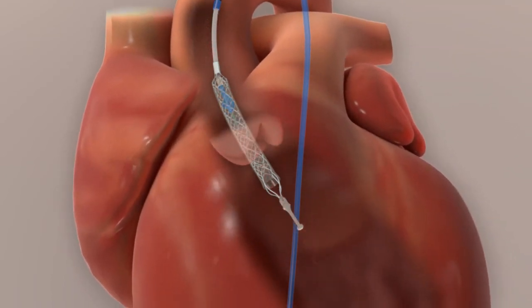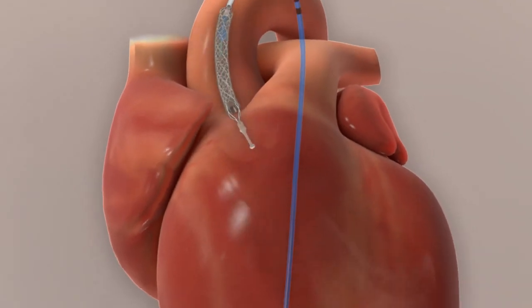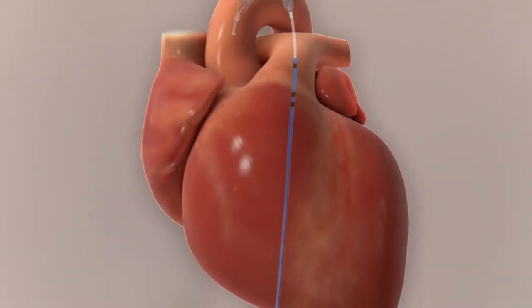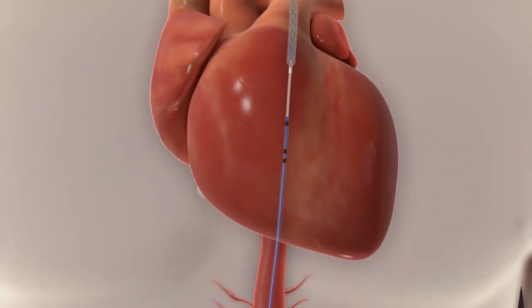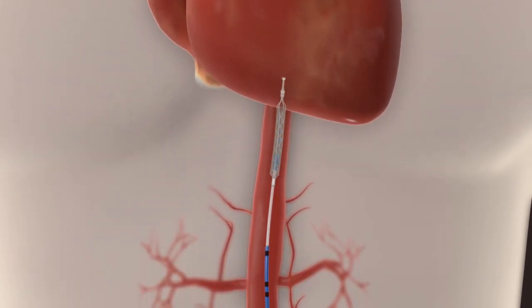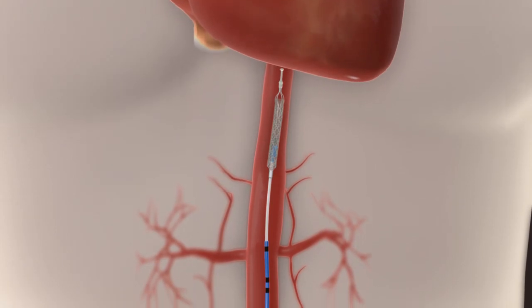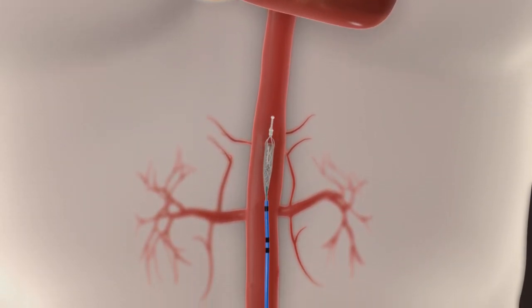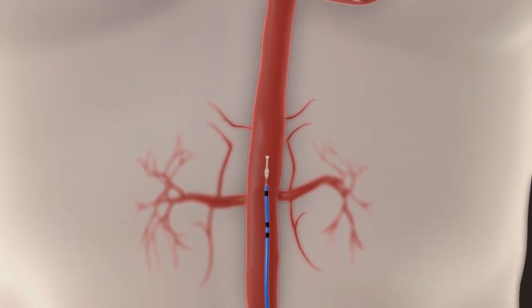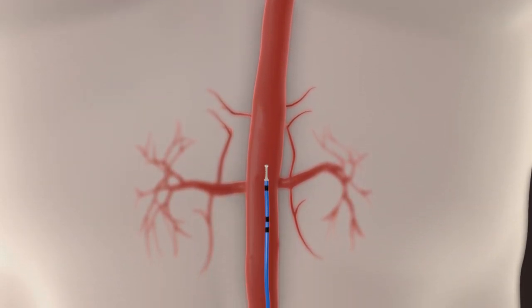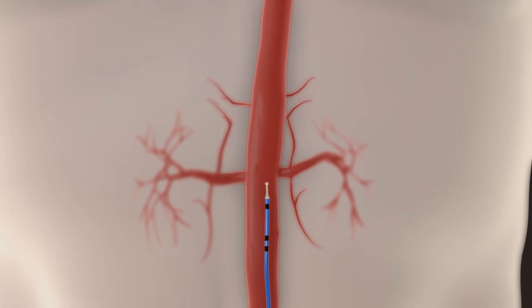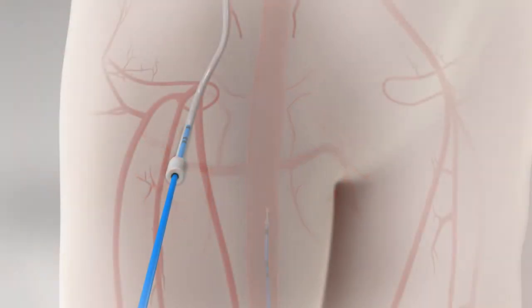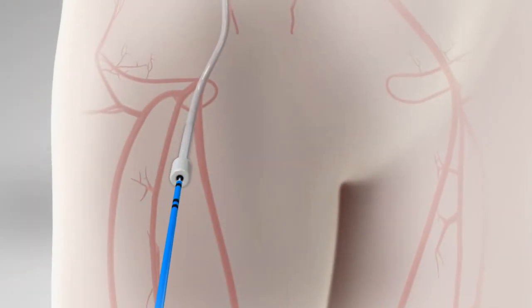Once the period of support is complete, the device is withdrawn into the descending aorta. The cannula and impeller are re-collapsed into the outer sheath and the entire device is removed from the body.